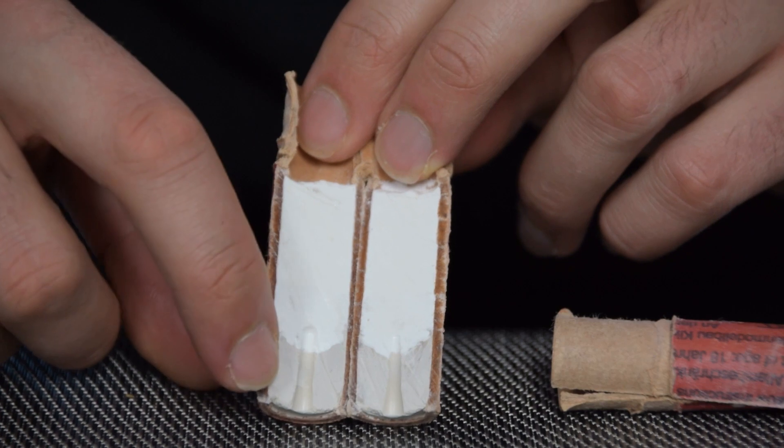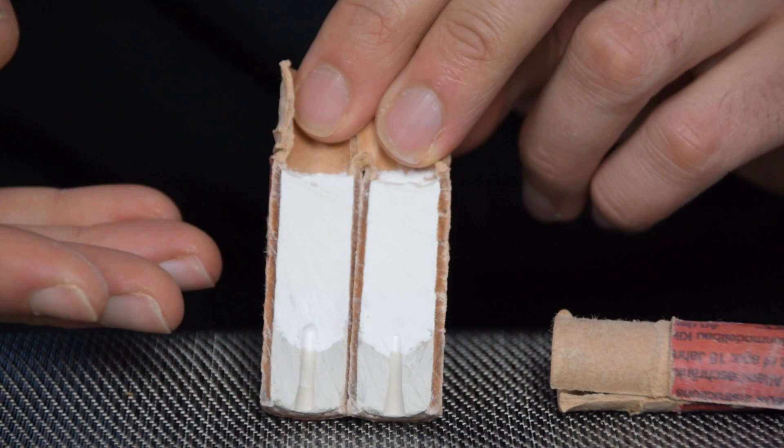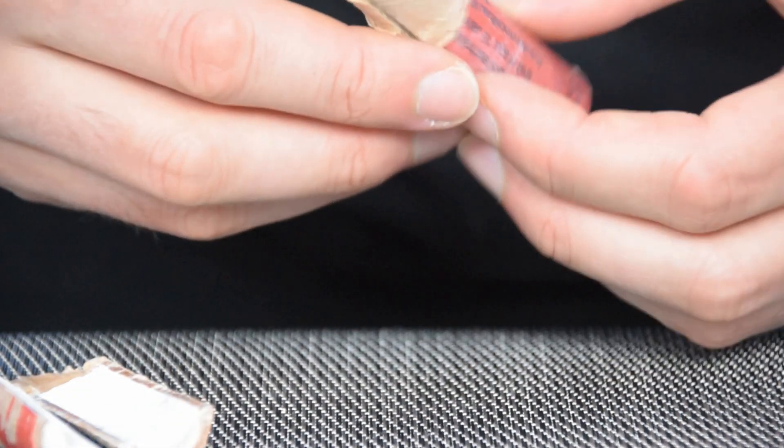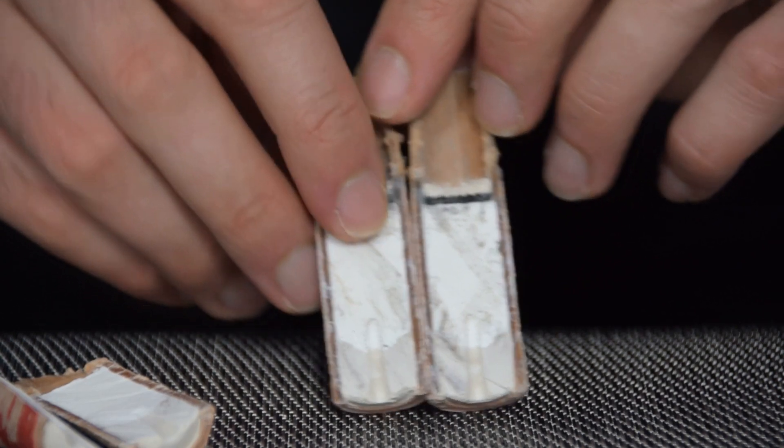So you notice there's a hole that goes from the nozzle into the propellant and that's basically where the burn is going to start. Now if we compare this to the C6-5 motor you'll see that it's actually got a little bit of a different anatomy.